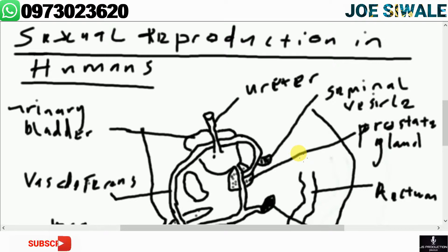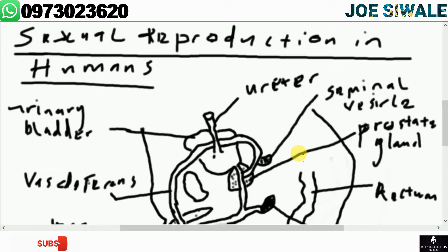Today we're going to look at sexual reproduction in humans. The process of fertilization in humans involves introduction of the male gametes into the female reproductive system before the sperm can fuse with the ovum to form the zygote. To ensure that this happens, humans have developed a special reproductive system. So we need to look at the structure and the functions of the male reproductive system.